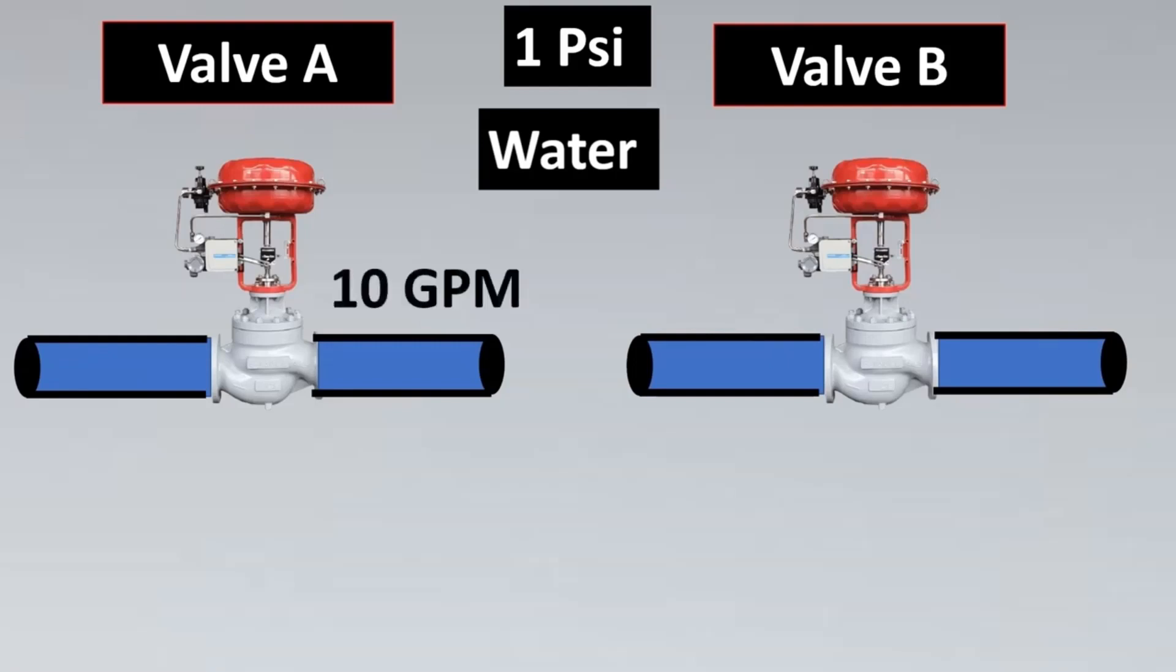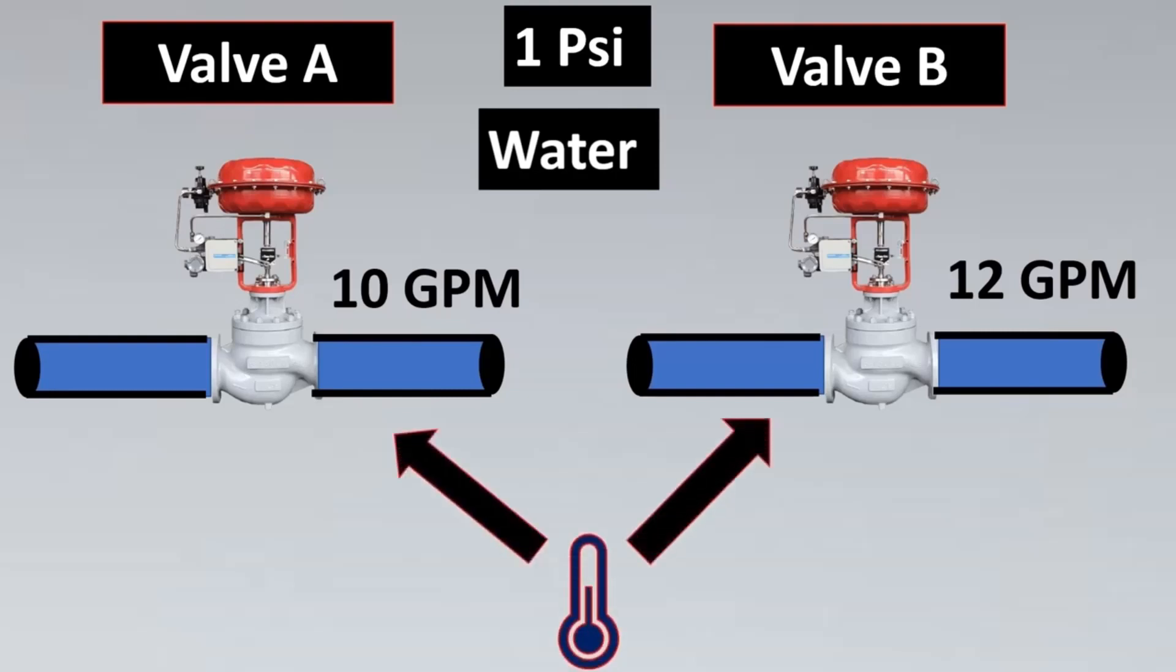So let us select water because water is one of the most available substances and very easy to be found at any site or at any vendor location. Now let's keep water for both the valves. I have kept the same pressure drop, I have kept the same liquid. Ideally I should get the flow rate to be same but for this valve I get 10 GPM as the flow rate and for valve B I am getting 12 GPM.